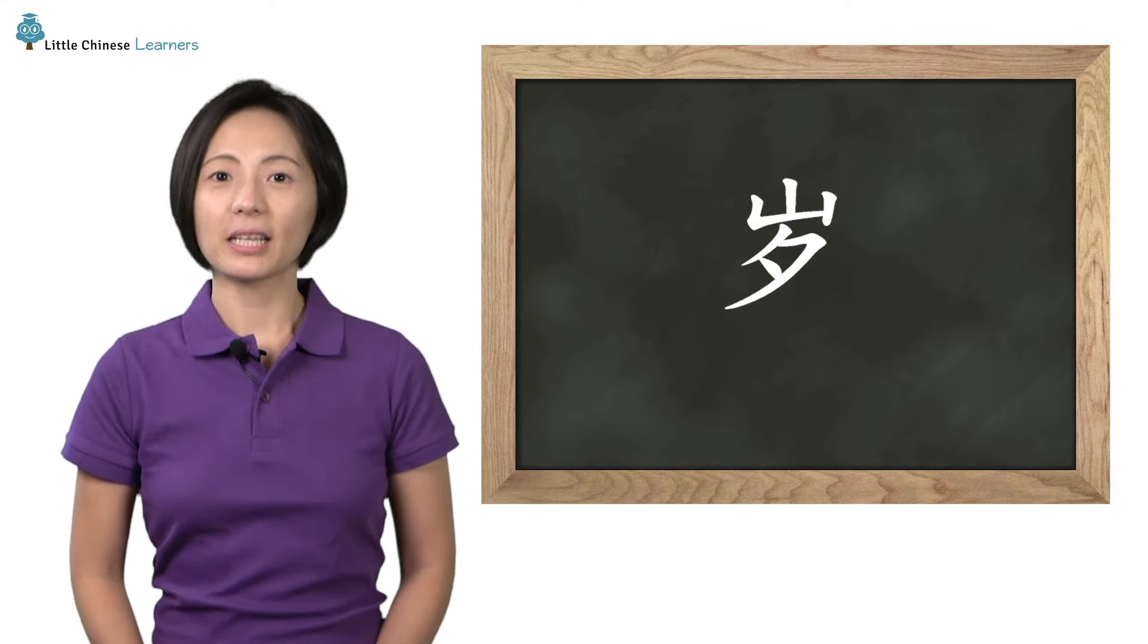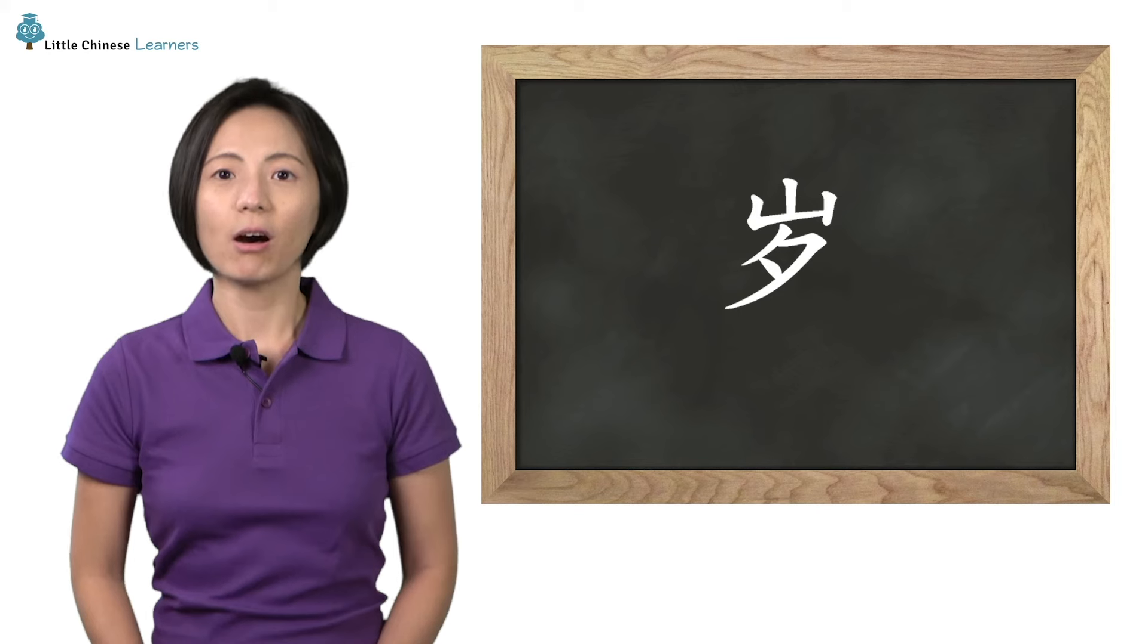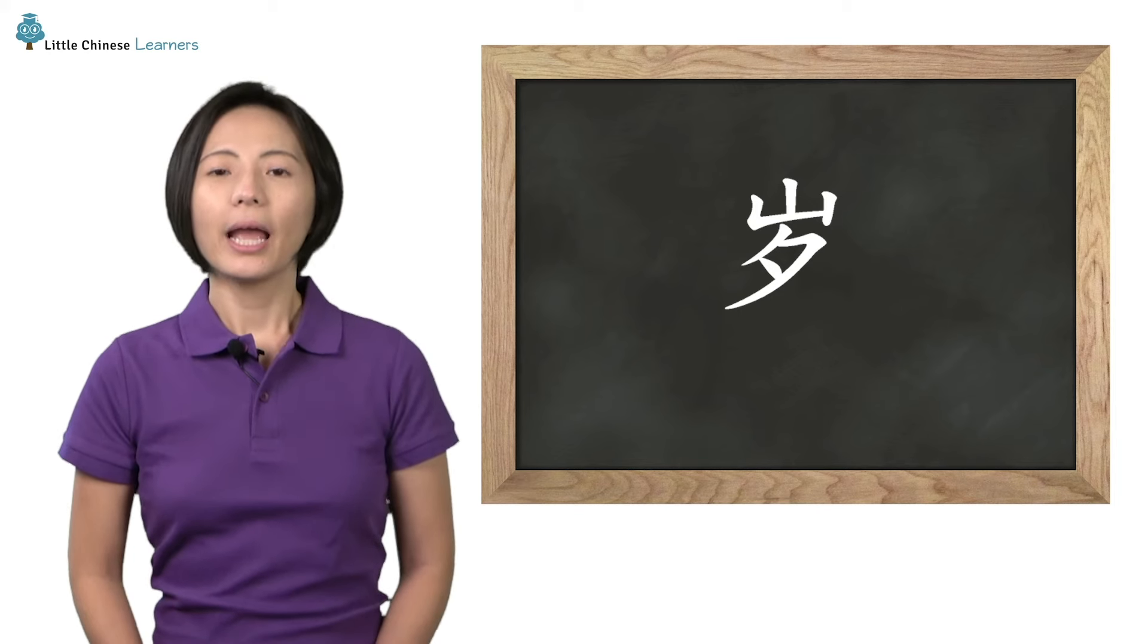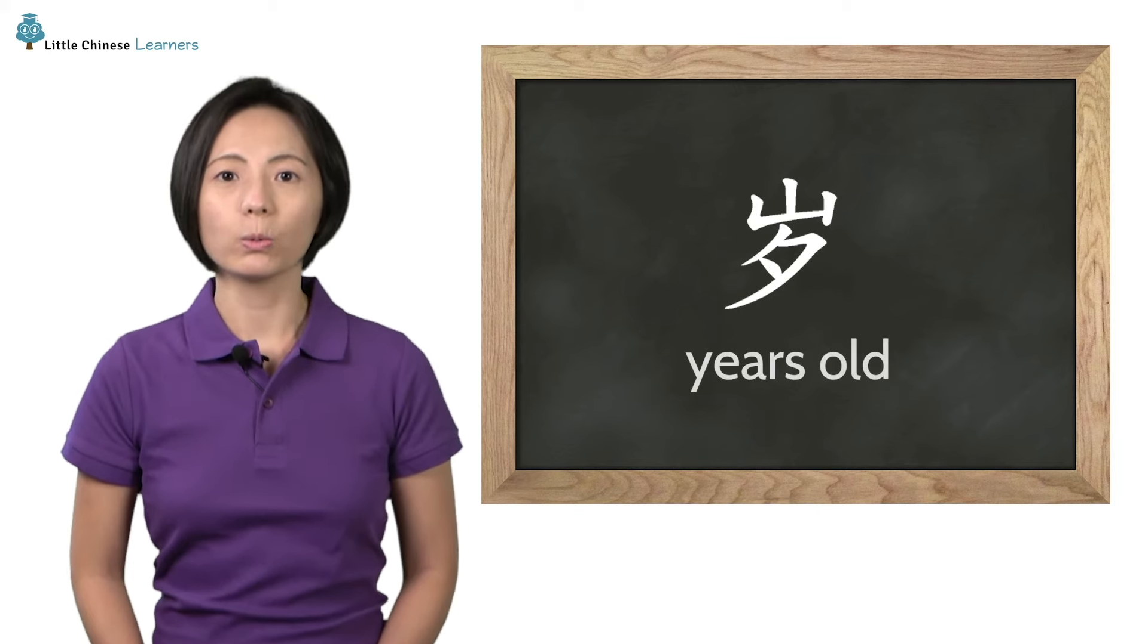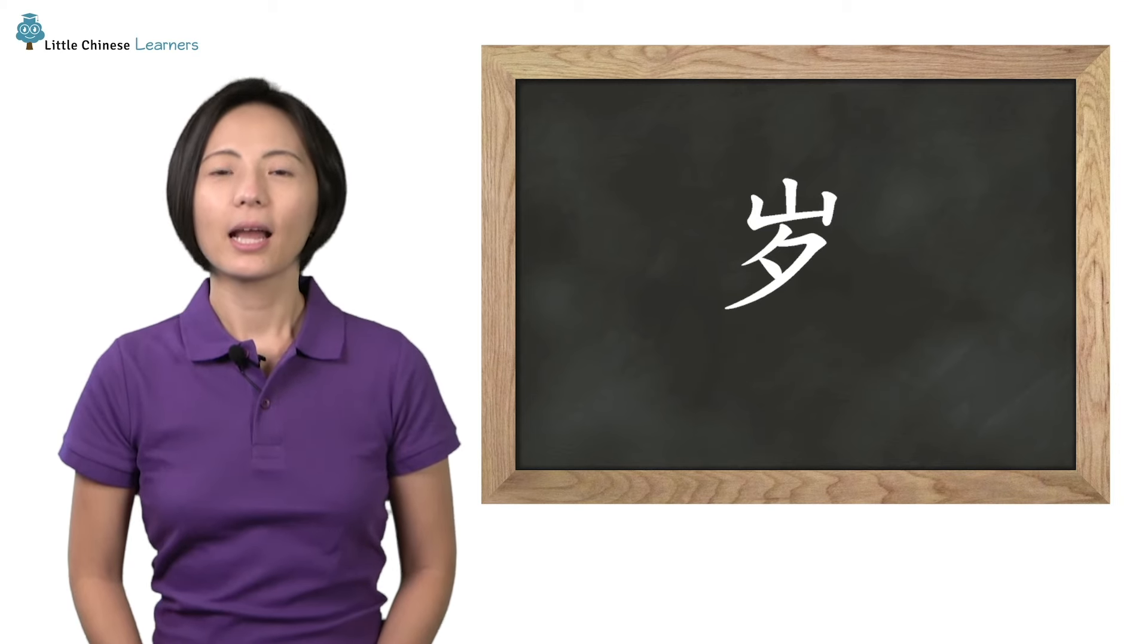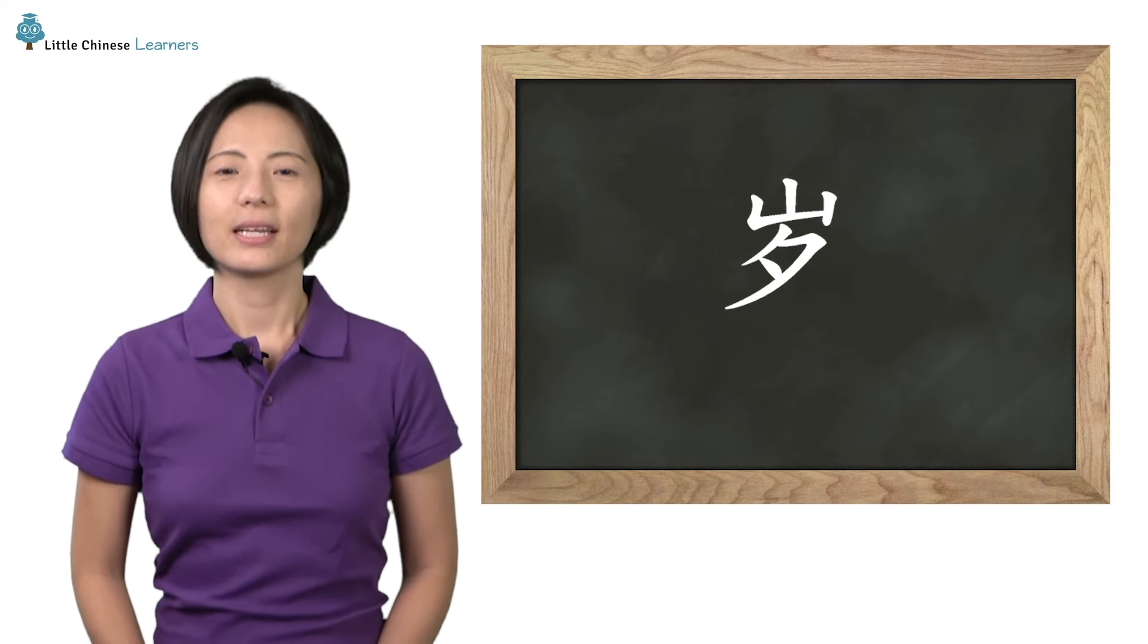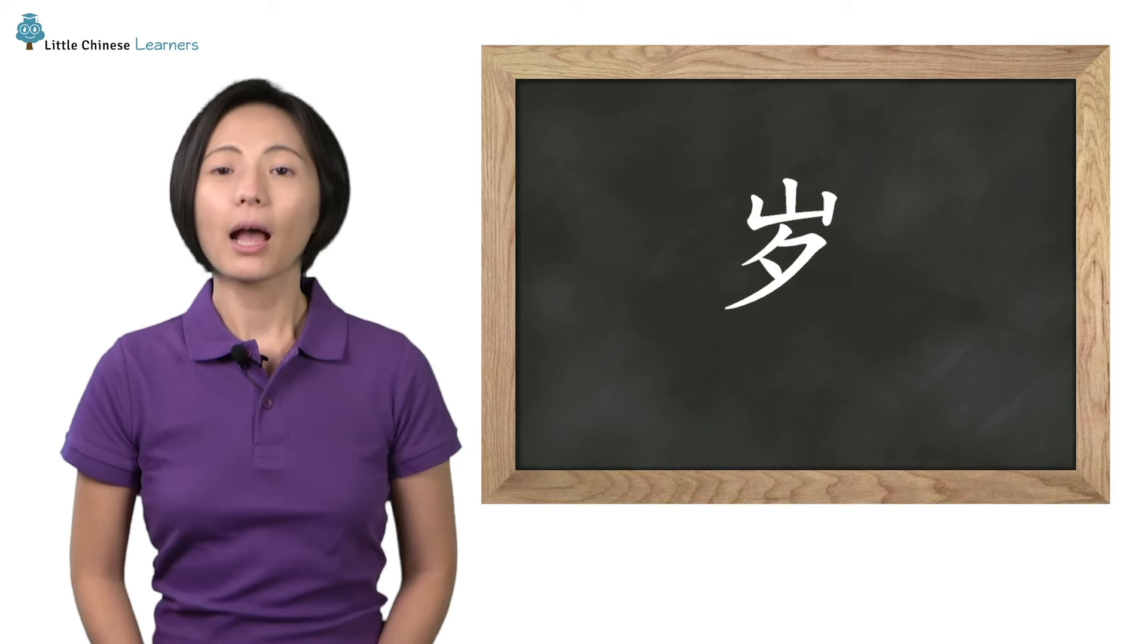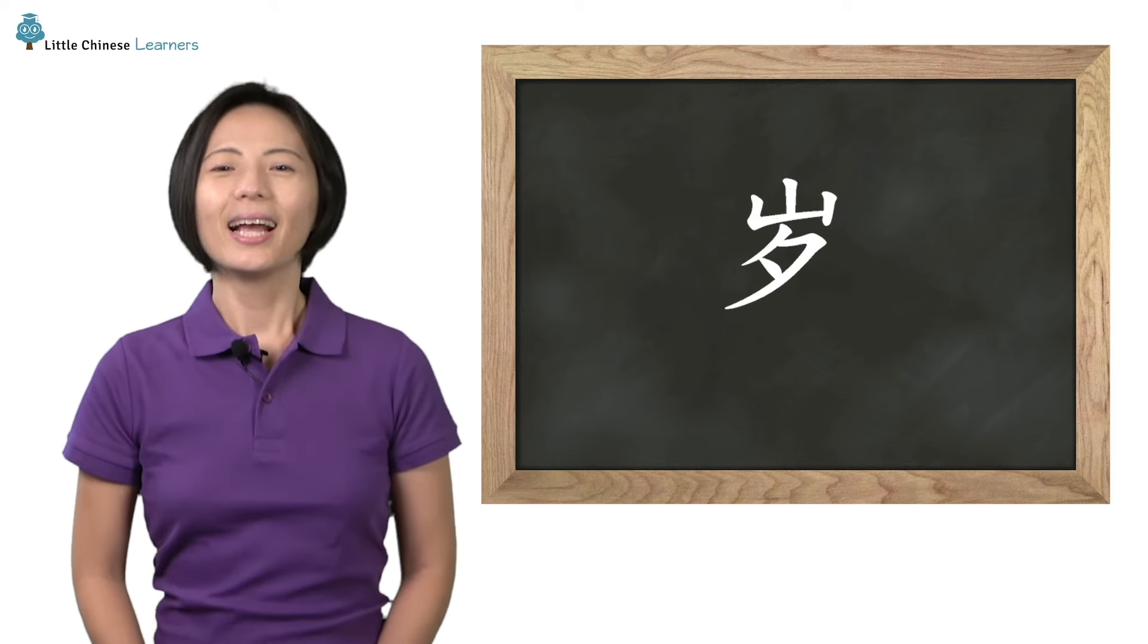And finally, the last character we have is called 岁. It means years old. 岁, 岁. Now you try it. 你真棒!